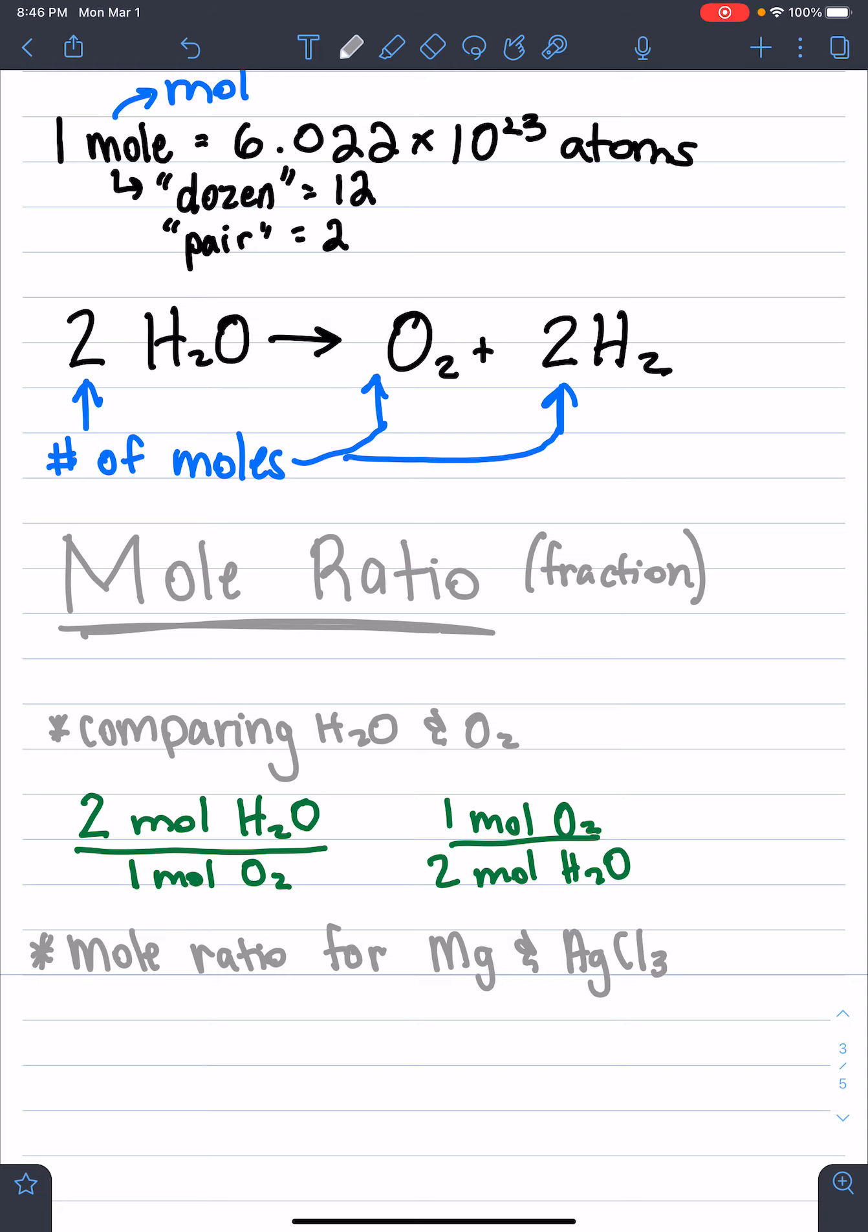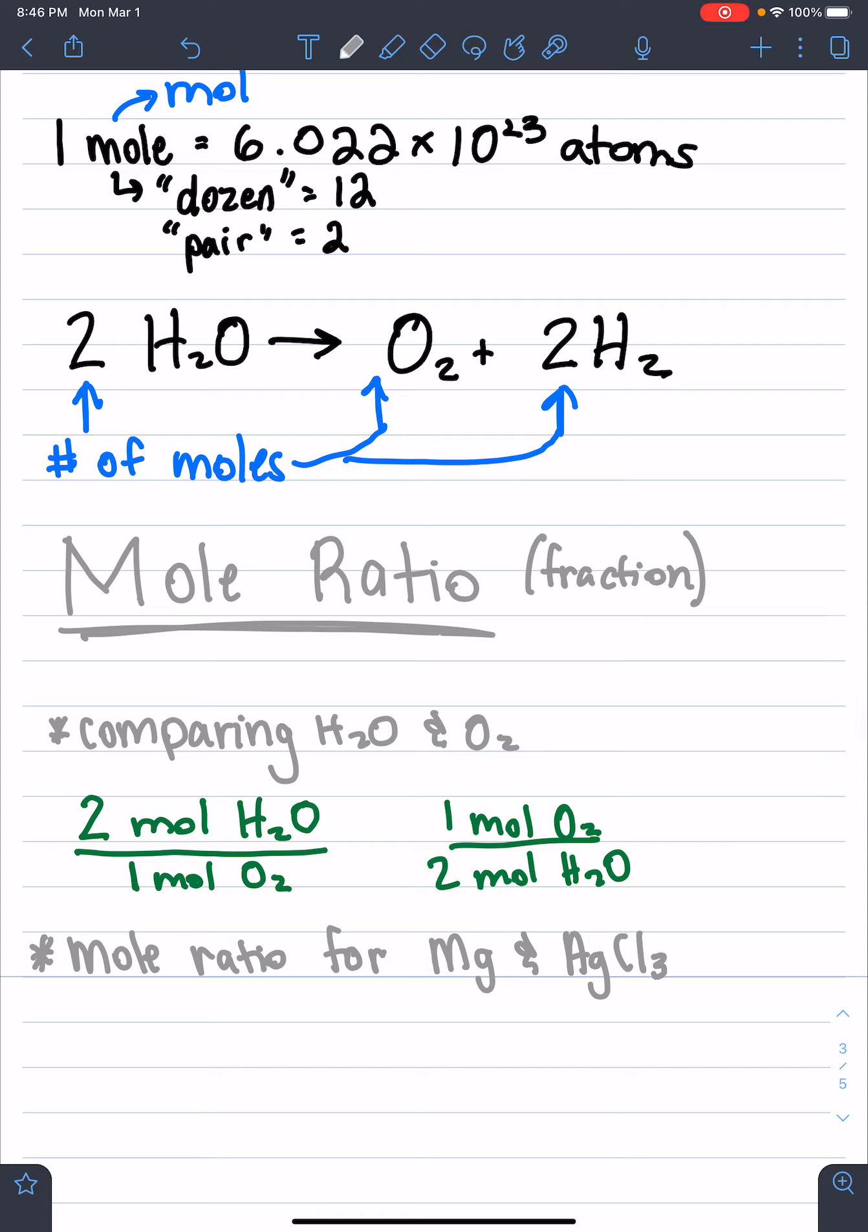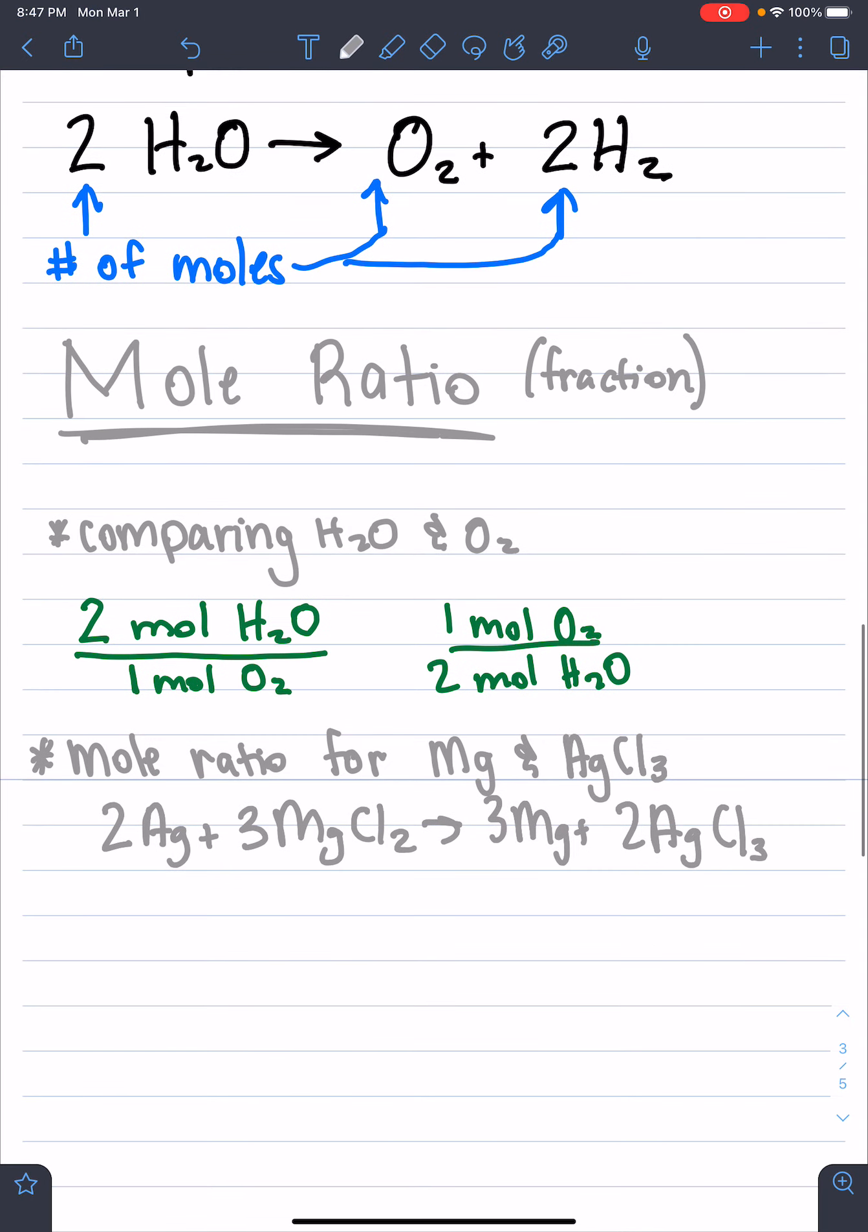So I give you that problem, and I give you this equation down below: 2Ag plus 3MgCl2 goes to 3Mg plus 2AgCl3. Say I gave you that equation, and I asked you to give me the mole ratio for Mg and AgCl3.